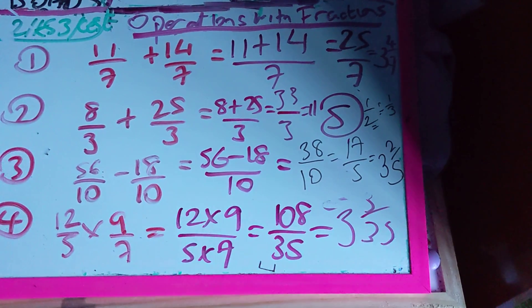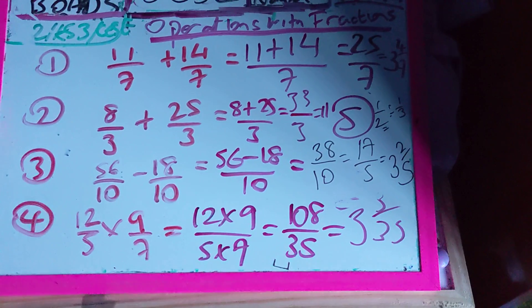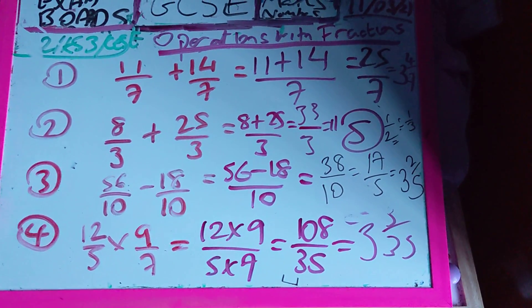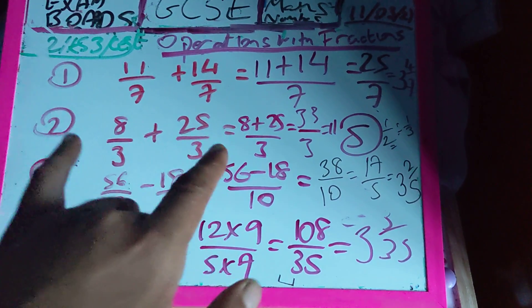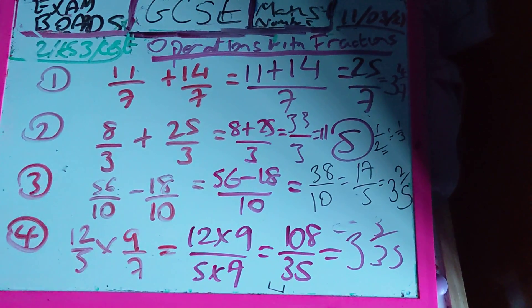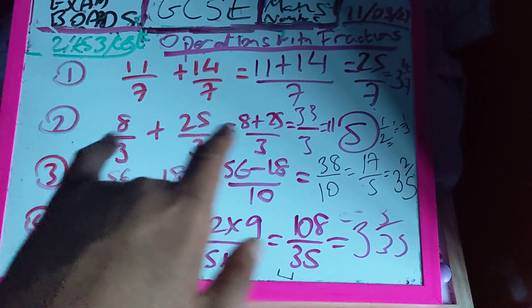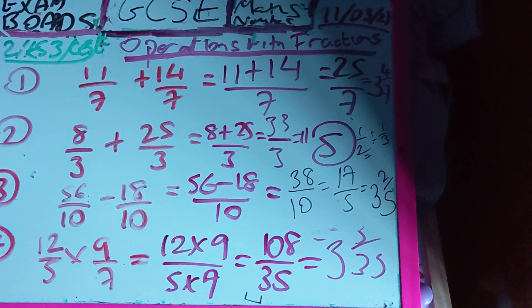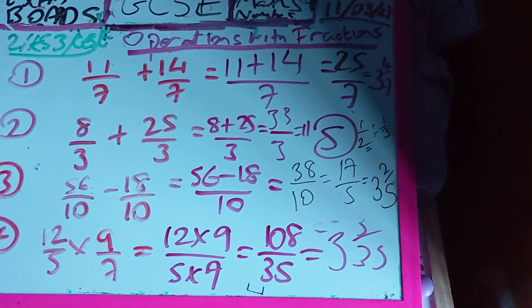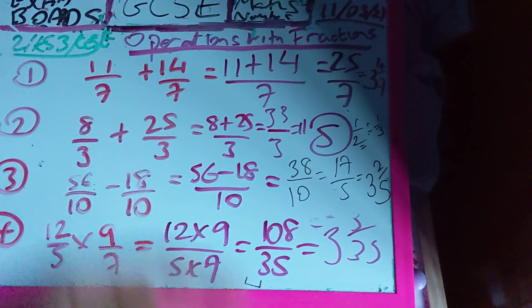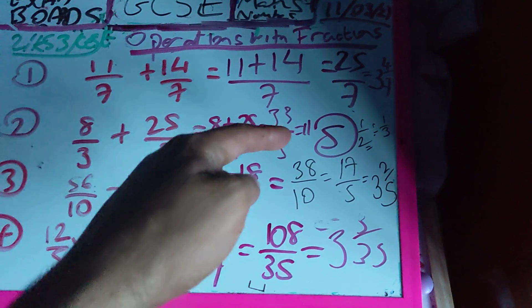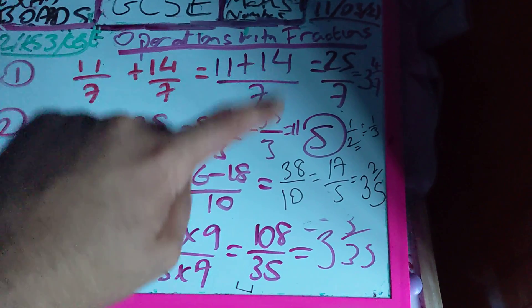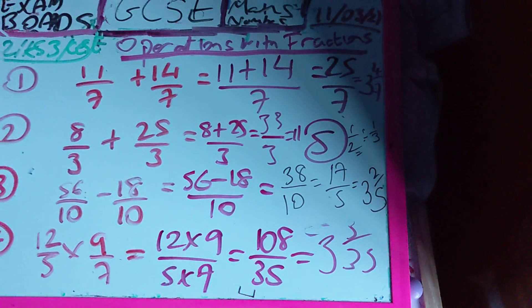Right guys, question number two, 8 over 3 plus 25 out of 3. Same denominator, so 8 plus 25, just add the top numbers. 8 plus 25 over 3. 8 plus 25, guys, is going to be 33 over 3. 33 over 3 gives us a whole number of 11. 33 divided by 3 gives us 11, and then there is no remainder.